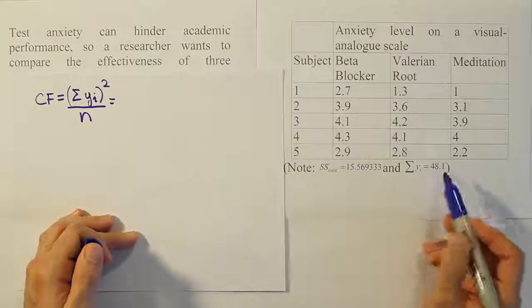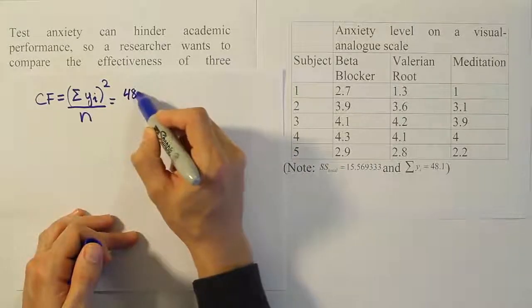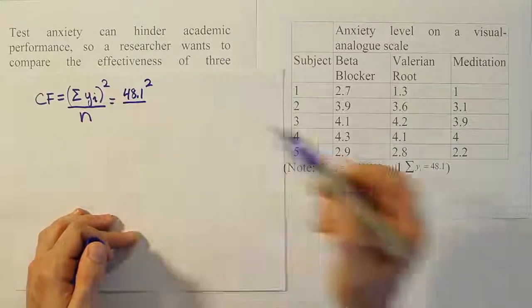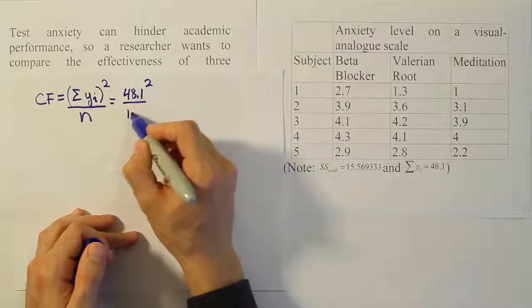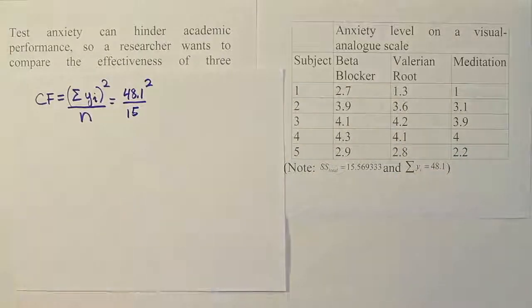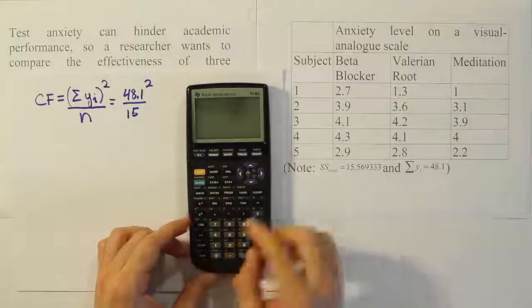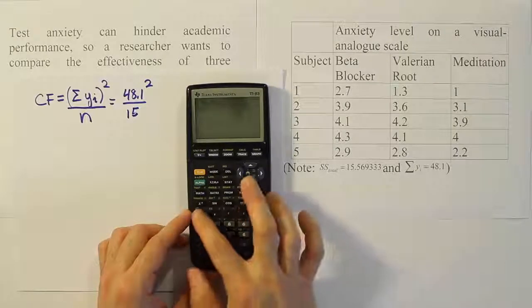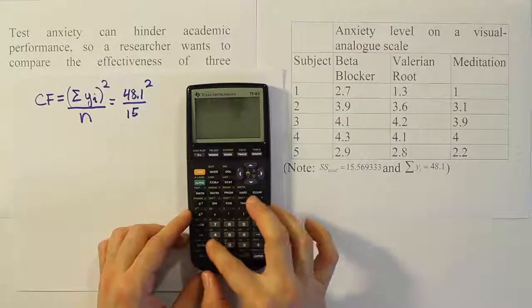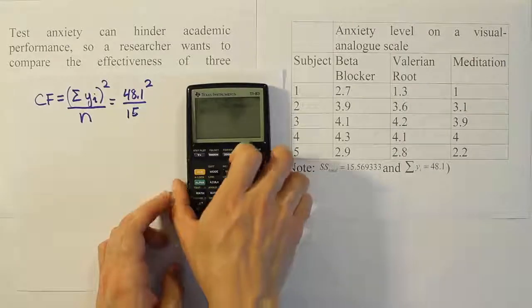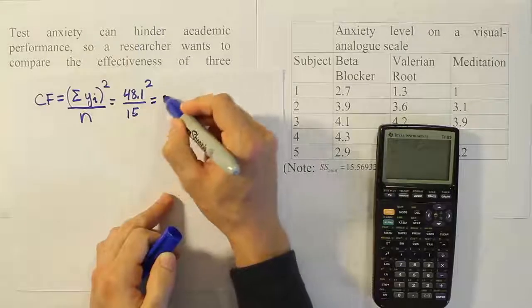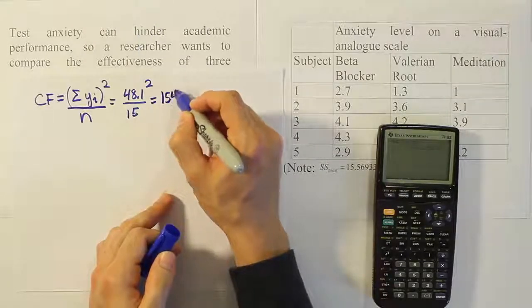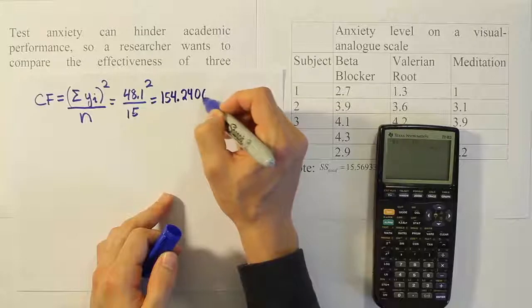The correction factor is the summation of the yᵢ values squared, divided by n, the number of values. The summation of yᵢ was given to us as 48.1. We square that and divide by n. There are three columns of five values, so n = 15. That gives us 48.1² ÷ 15 = 154.2406 repeating.